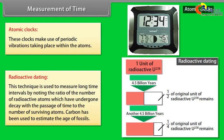Radioactive dating: this technique is used to measure long time intervals by noting the ratio of the number of radioactive atoms which have undergone decay with the passage of time to the number of surviving atoms. Carbon has been used to estimate the age of fossils.